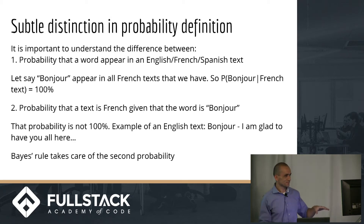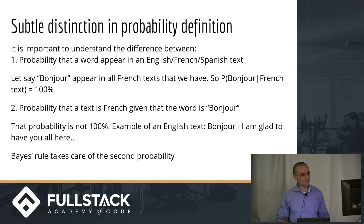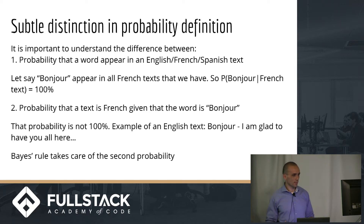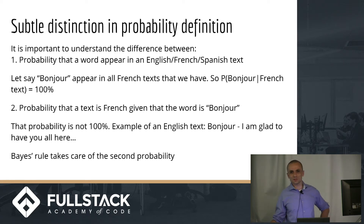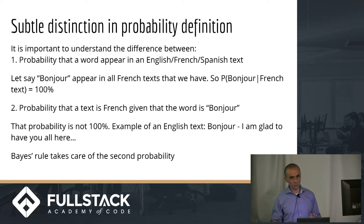Here's an example: the word 'bonjour' is French — good morning. If you look at that word alone, it's a hundred percent likely to appear in a French text. But the probability flips when you ask: given the text 'Bonjour, I'm glad to have you all here,' what language is it? That text is English but contains 'bonjour.' Using the Bayes formula, you find the correct probability of English or French given that word — and it won't be a hundred percent.